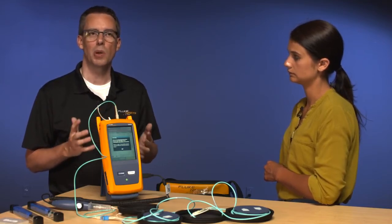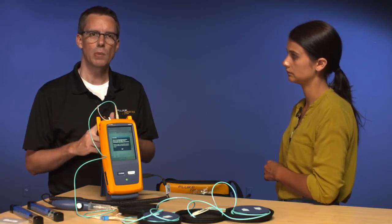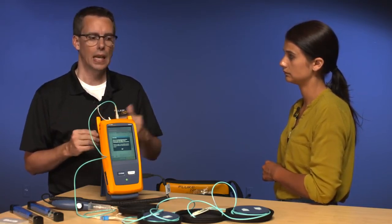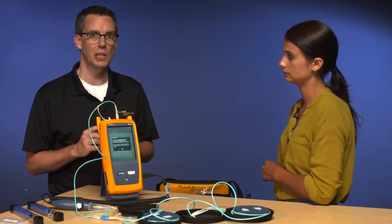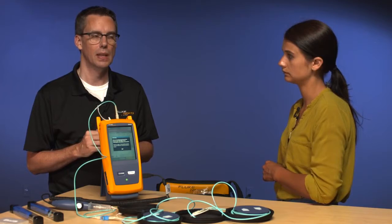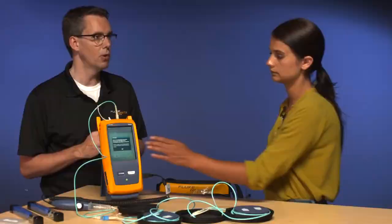Now the tester is going to complain here that there's something not right because it's expecting the launch fiber, the fiber that you're testing, and the tail fiber. We've only got the launch and the fiber here. The tester is smart enough to know that something's not quite right here. That's OK. We're just verifying the launch cords here. Tap OK for me.